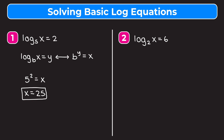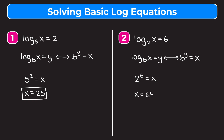Moving on to example two, we have log base 2 of x is equal to 6. Again, we convert from log form to exponential form. The base of our log, 2, becomes the base of our exponent, raised to the 6th power, set equal to x. So x equals 2 to the 6th, and 2 to the 6th is 64. Therefore x is equal to 64.